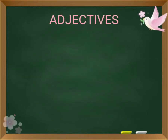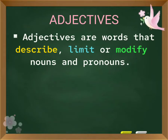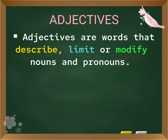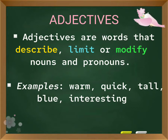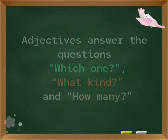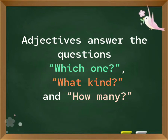Adjectives. Adjectives are words that describe, limit, or modify nouns and pronouns. Examples: warm, quick, tall, blue, interesting. Adjectives answer the questions: which one, what kind, and how many.